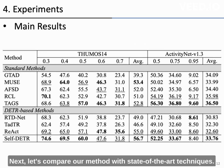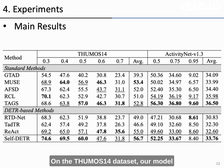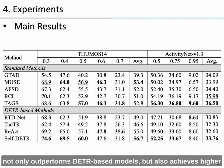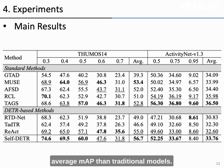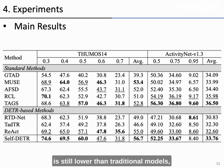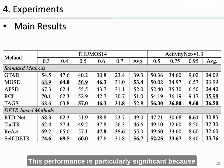Next, let's compare our method with state-of-the-art techniques. Under the THUMOS14 dataset, our model not only outperforms DTR-based models, but also achieves higher average mAP than traditional models. Under the ActivityNet dataset, our performance is still lower than traditional models, but it excels among DTR-based models. This performance is particularly significant because it was achieved using only the previously underperforming standard attention.